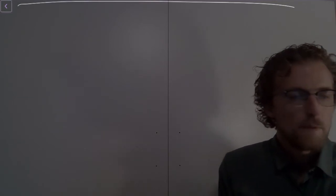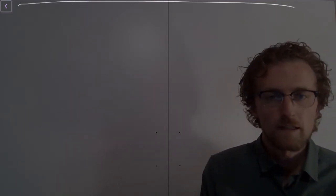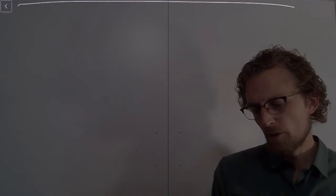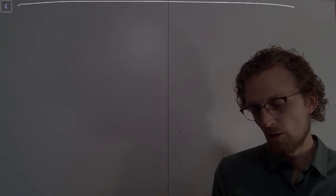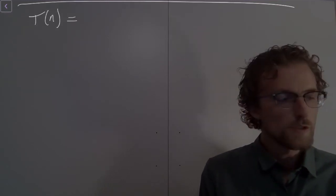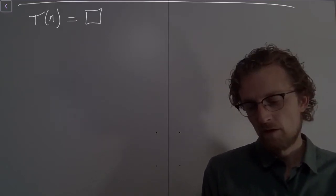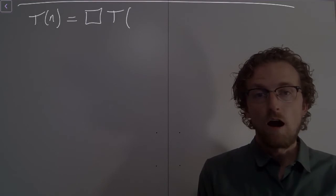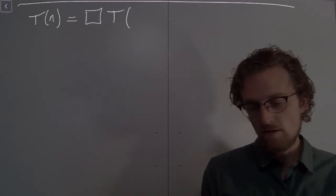So here's the basic idea of repeated substitution with recurrence relations. So suppose you're given a recurrence relation that looks like this. So I've got T(n) equals some function times T of some function of n,